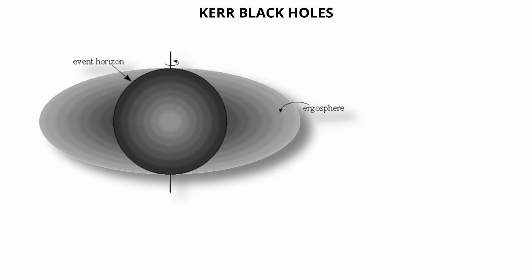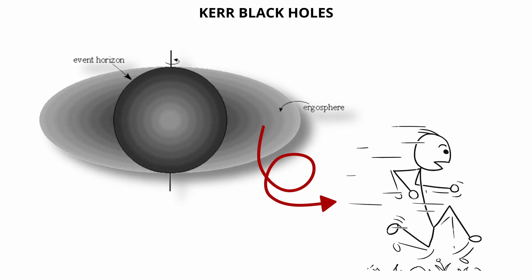Within the ergosphere, objects cannot remain stationary. They are forced to move in the direction of the black hole's spin.